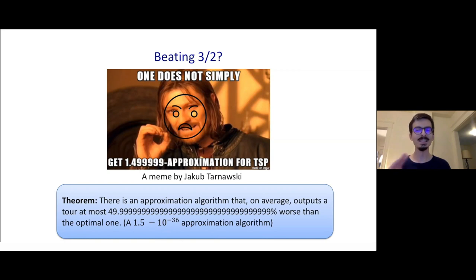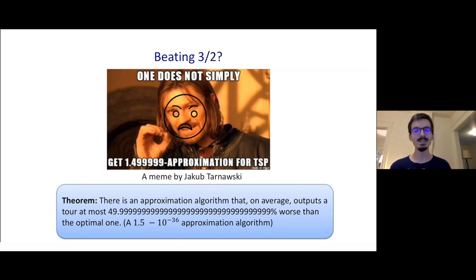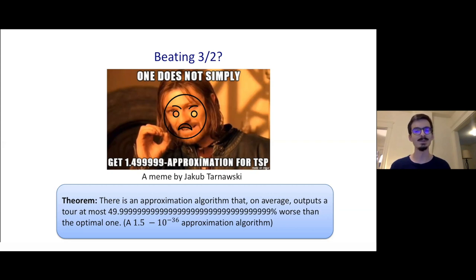Just in case you think we sound insane, I want to be clear that this result is partially about introducing new techniques that might be applicable elsewhere. But it's also about breaking a kind of psychological barrier, more than anything. We were stuck with this old algorithm for a long time, and now we know there's something at least a little better. Part of the point is to give people hope that there's an algorithm much better than 50% and inspire people to look for it.